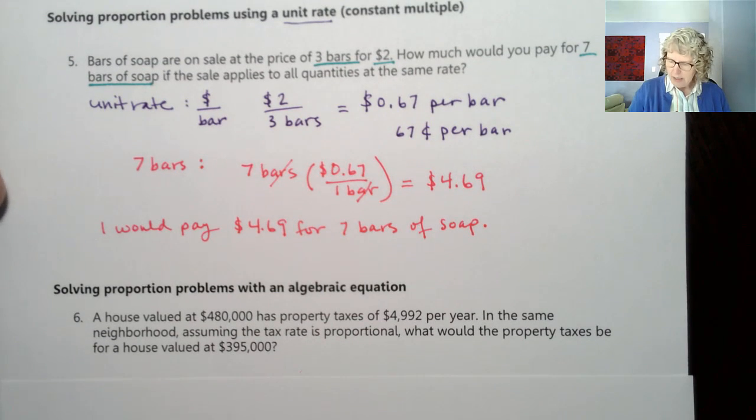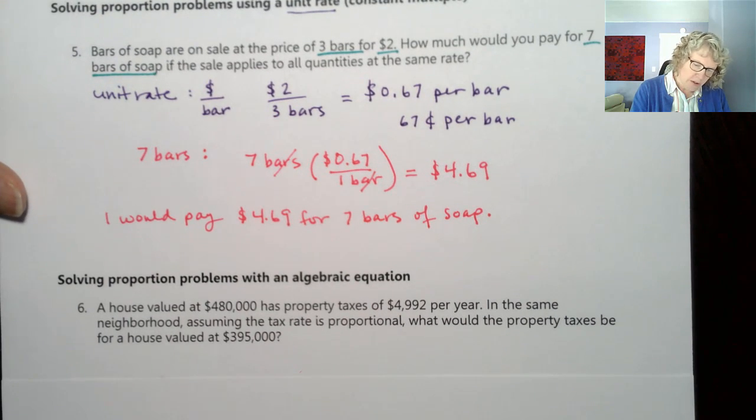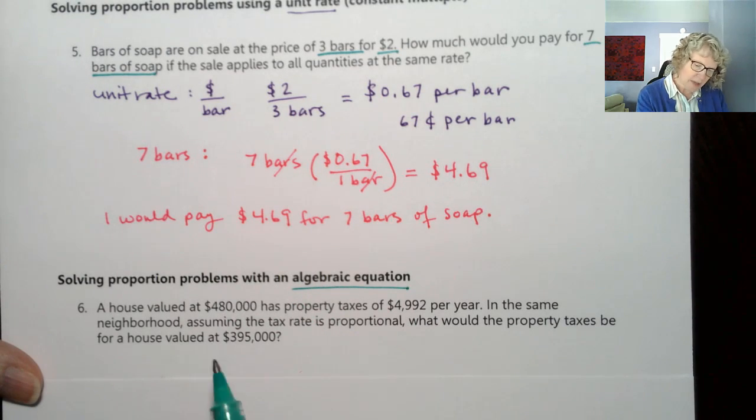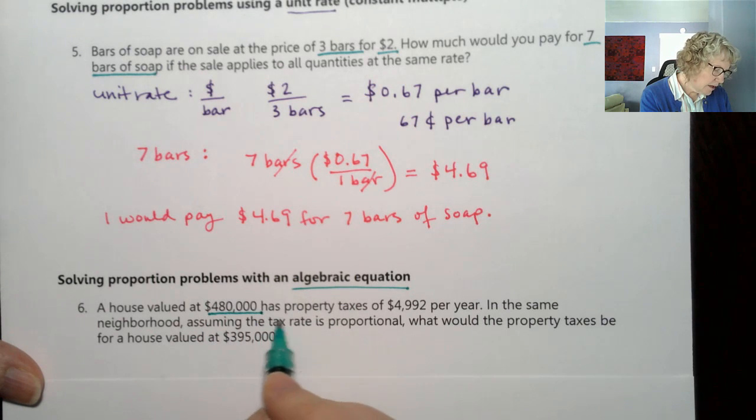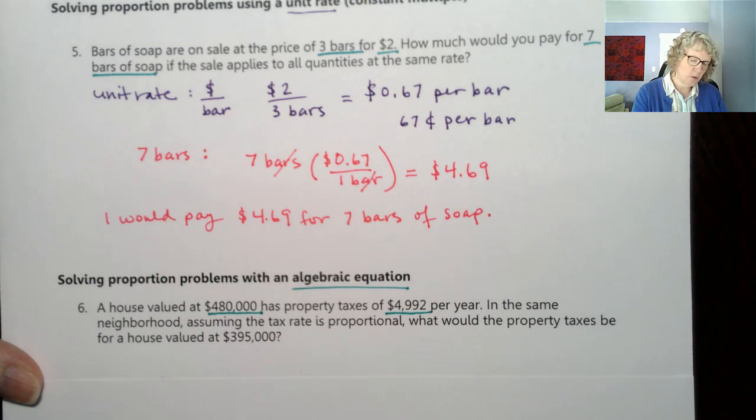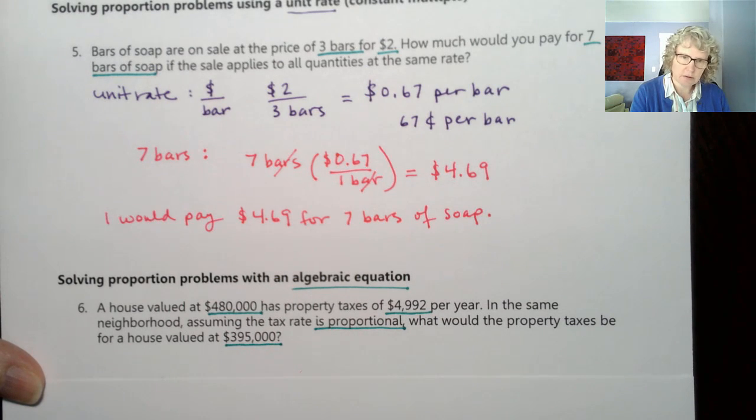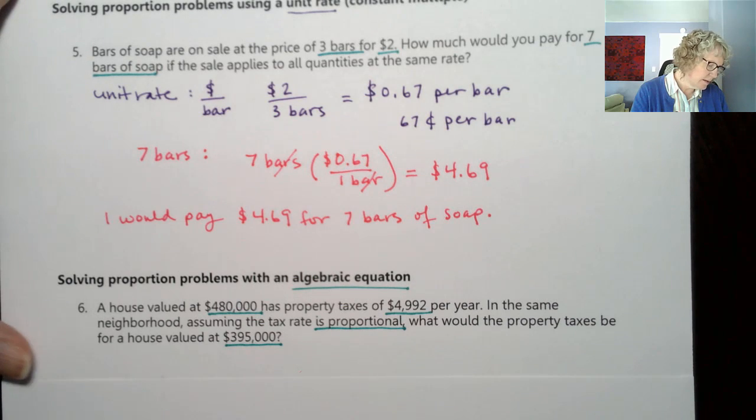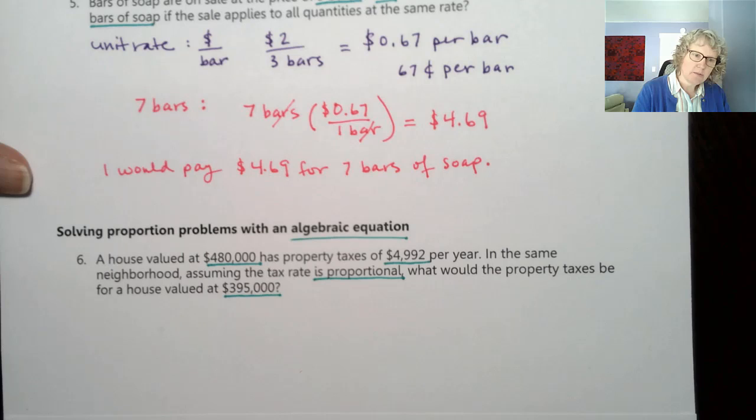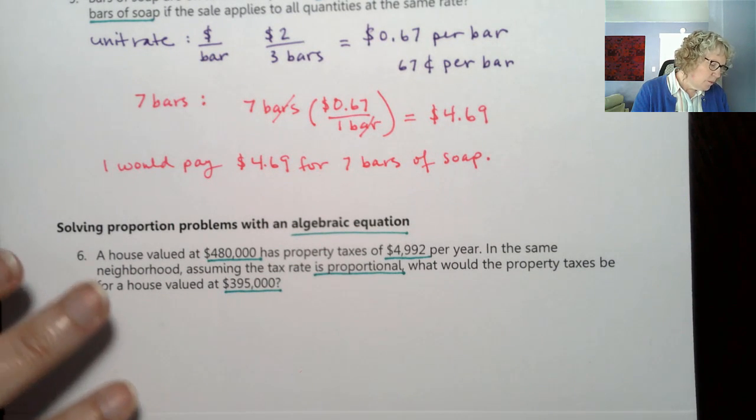Let's look at our third method: solving proportion problems with an algebraic equation. If you are familiar with algebra or like algebra, you may be more familiar with this method. A house valued at $480,000 has property taxes of $4,992 per year. In the same neighborhood, assuming the tax rate is proportional, what would the property taxes be for a house valued at $395,000? This is related to one of the examples at the very beginning. Property taxes should be proportional to the house's value.